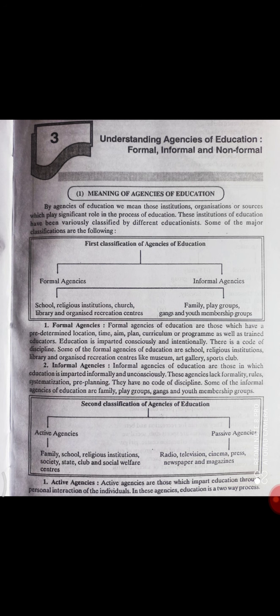As we have to start a new chapter of education. Dear students, the chapter is 'Understanding Agencies of Education: Formal, Informal and Non-Formal Education.' As we have already read two chapters of education — the meaning of education and the aims of education — in this chapter we have to discuss what are the various agencies by which we are getting education. First of all, we would like to understand the meaning of agencies of education.